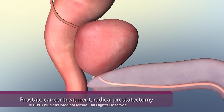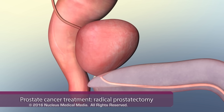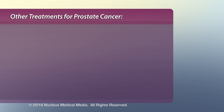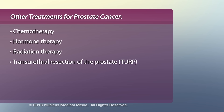One treatment for prostate cancer is radical prostatectomy, a procedure in which the entire prostate and select surrounding tissues are surgically removed. Other treatments for prostate cancer include chemotherapy, hormone therapy, radiation therapy, and other surgical procedures such as transurethral resection of the prostate, or TURP.